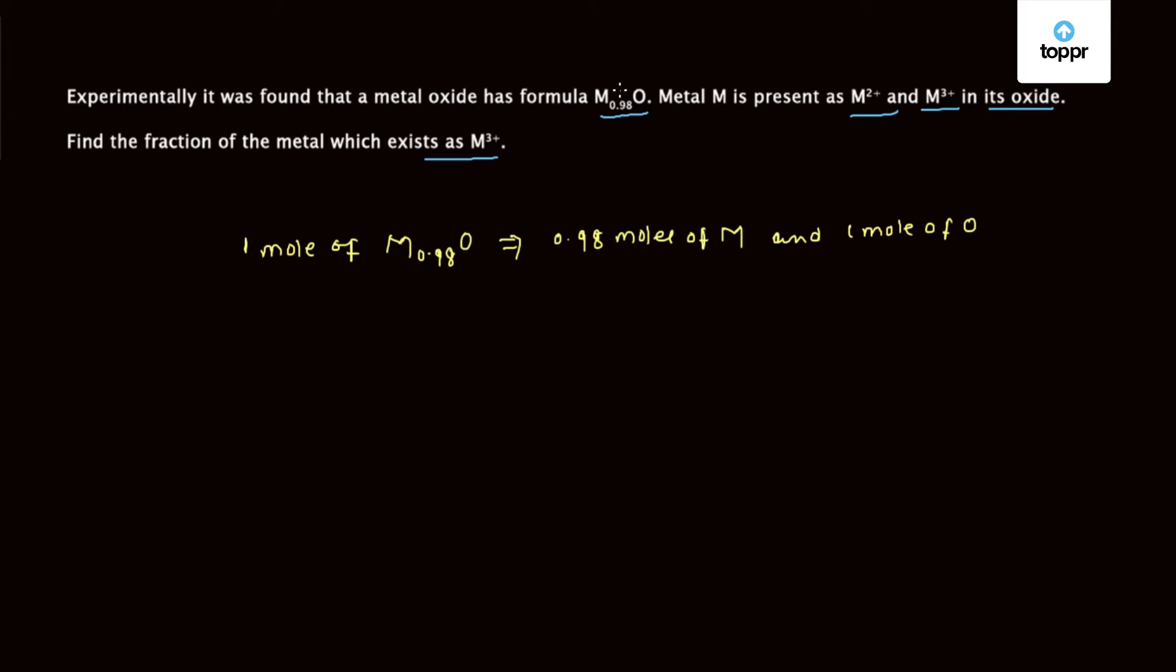As we know this compound is neutral, so the net charge should be zero. Let x moles of M be present as M3+. Therefore, moles of M2+ will be 0.98 minus x.